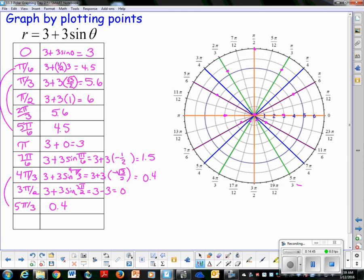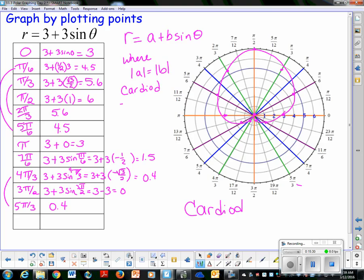This is called a cardioid shape. So these equations that look like this, and here's what's interesting about this equation. If I get an r equals a plus b sine theta, where a equals b, let's say the absolute value of a equals the absolute value of b, when those are identical, these are going to turn out to be cardioids. Now, this one is symmetric with the y-axis because of the sine in it, okay?